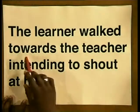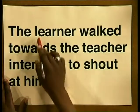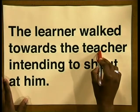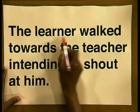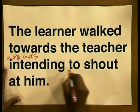Here's another example — it's also an ambiguous sentence because it has more than one meaning. Can you work out what these are? 'The learner walked towards the teacher intending to shout at him.' The problem with this sentence is that you don't know who is intending to do the shouting. Either the learner or the teacher is intending to shout. It's far more likely that it's the teacher who is intending to shout, but the meaning is still unclear. By adding in a few words, we can remove the ambiguity: 'The learner walked towards the teacher who was intending to shout at him.'